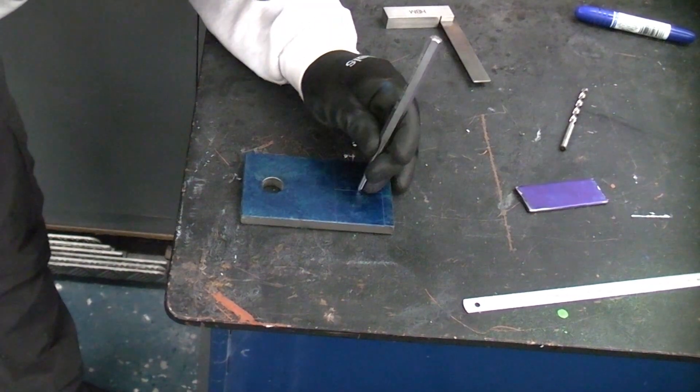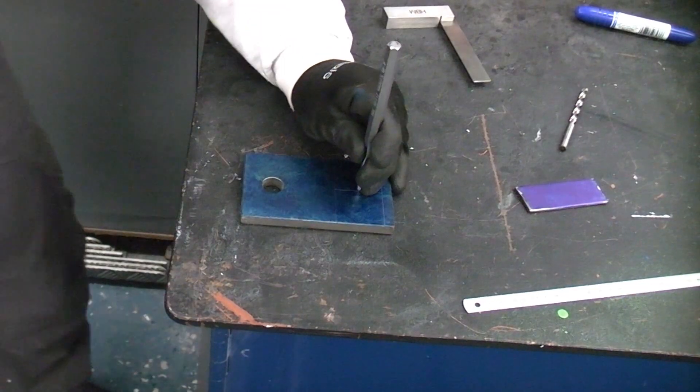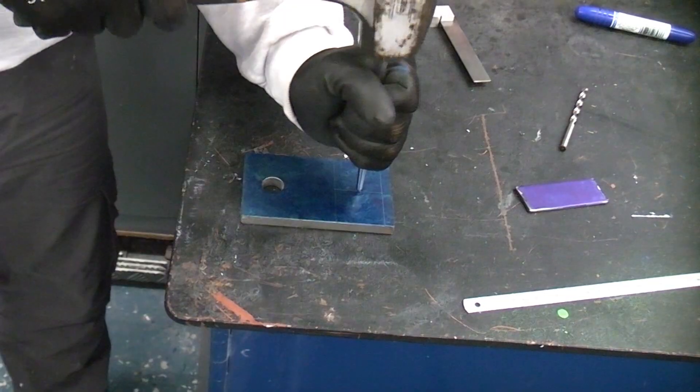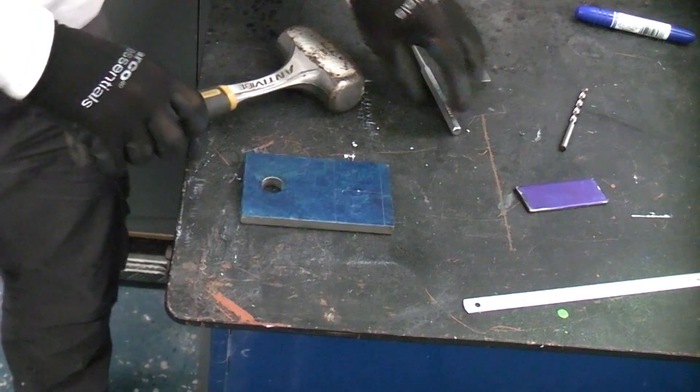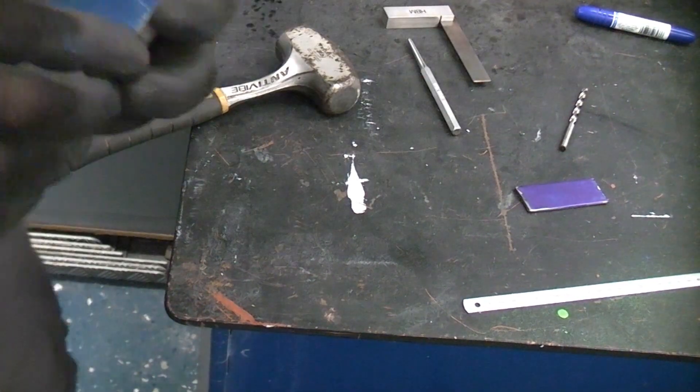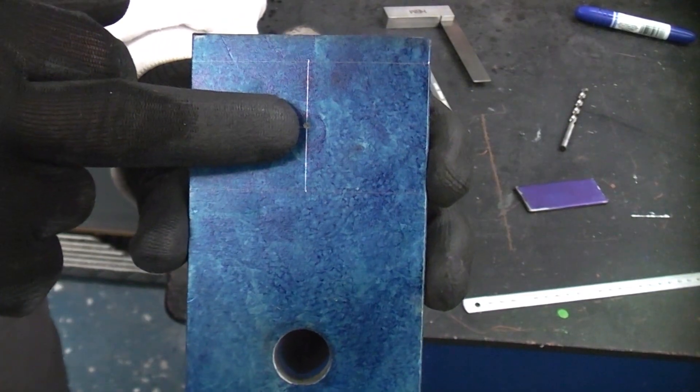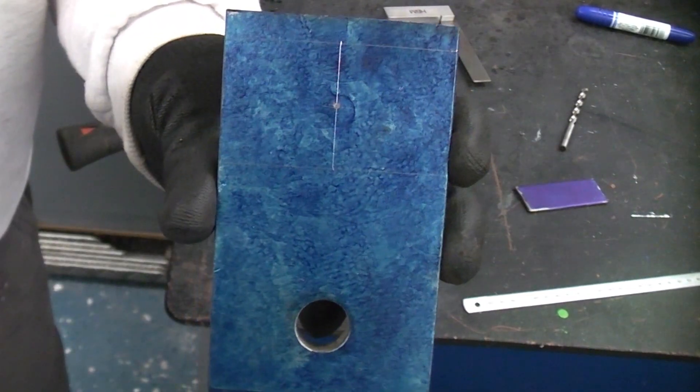Once you're confident it's in the correct position you can put the centre punch back in there and then you can give it a hard smack. And now if you look at that we have a centre punch mark that will be very easy to follow with the drill.